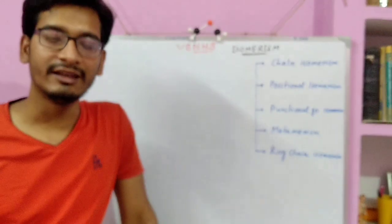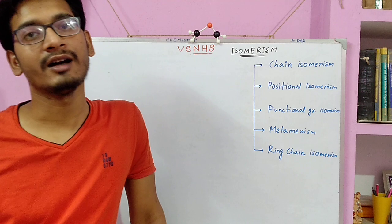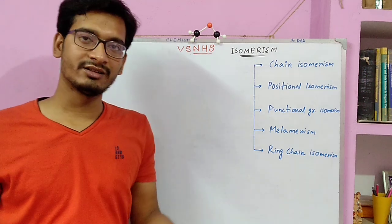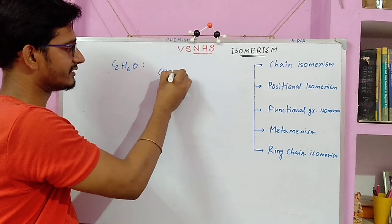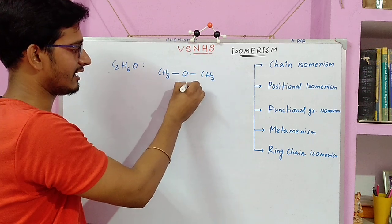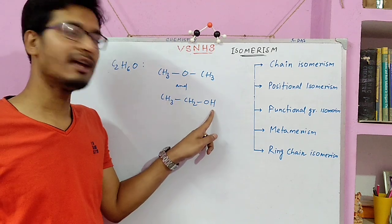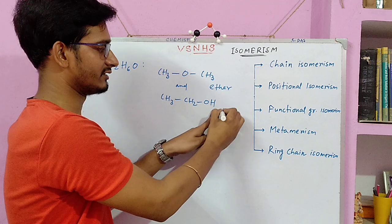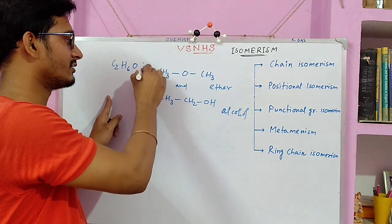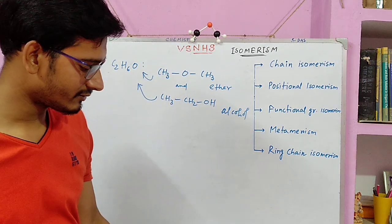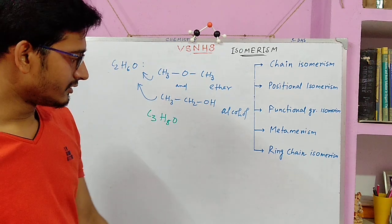Functional group isomerism: in this isomerism, the organic compound has the same molecular formula but a different functional group, and hence different chemical properties. For example, C2H6O can be written as CH3-O-CH3 (ether functional group) or CH3-CH2-OH (alcoholic functional group). The functional group is different but the molecular formula is the same — this is functional group isomerism. Homework: find the functional group isomers for C3H8O.